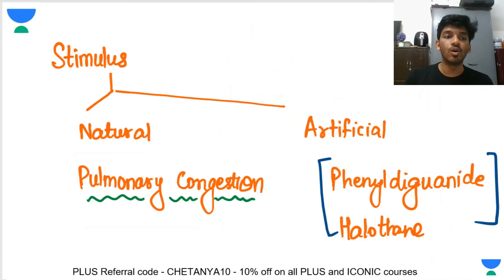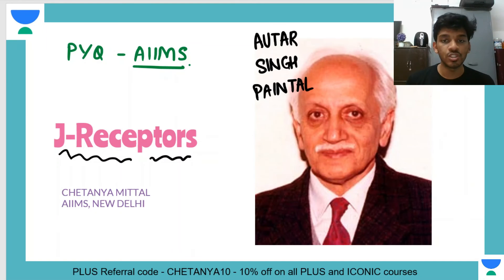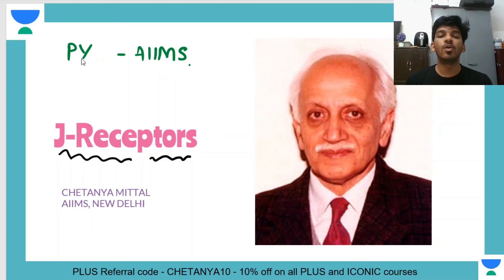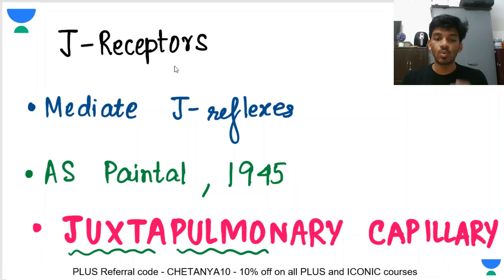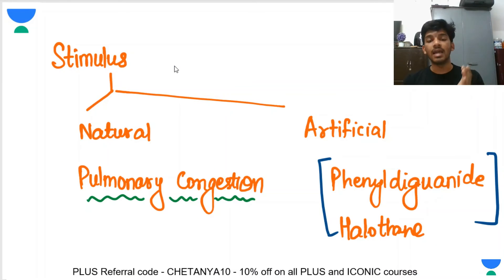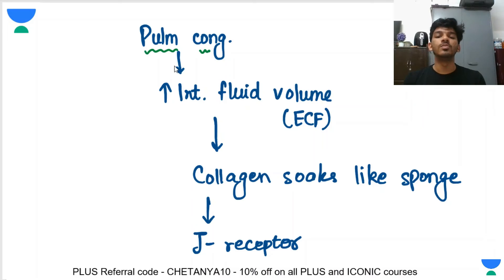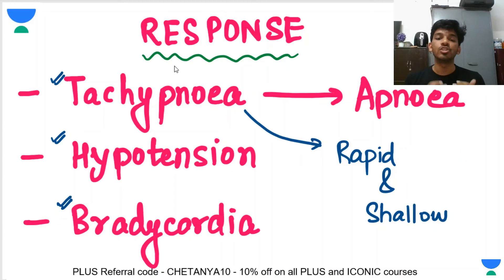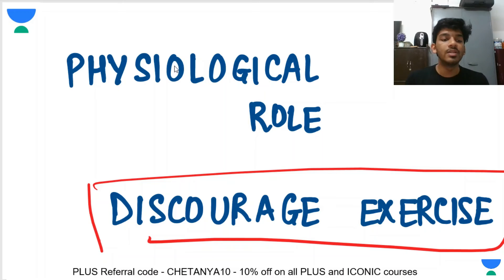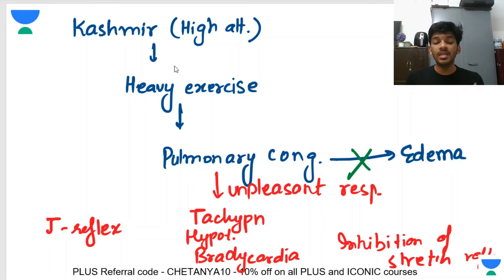To quickly summarize: A.S. Pintál discovered J receptors, which were a previous AIIMS exam question because he was a physiologist at AIIMS. They mediate J reflexes. Full form: Juxtapulmonary Capillary Receptors. Innervated by unmyelinated vagal fibers. Natural stimulus is pulmonary congestion, which increases interstitial fluid volume. Response is tachypnea, hypotension, bradycardia, and inhibition of stretch reflexes. With severe or artificial stimulation, there may be complete stoppage of breathing — apnea. Physiological role: to discourage exercise.